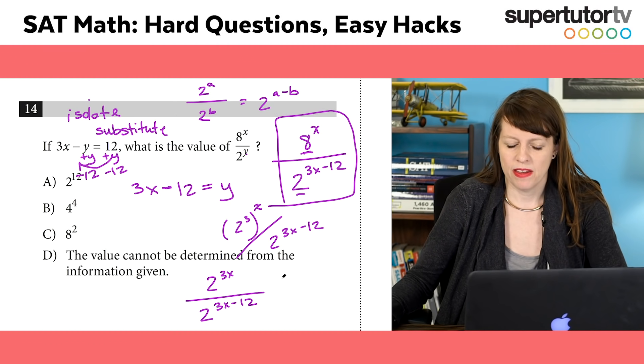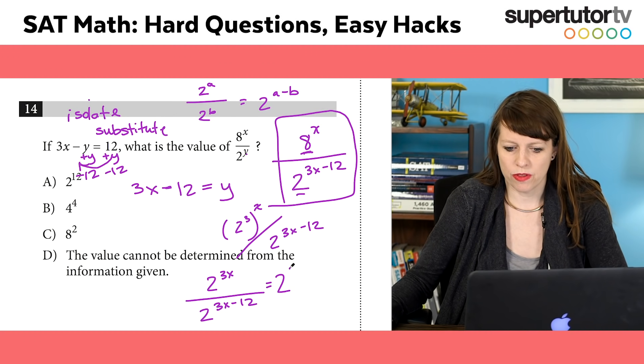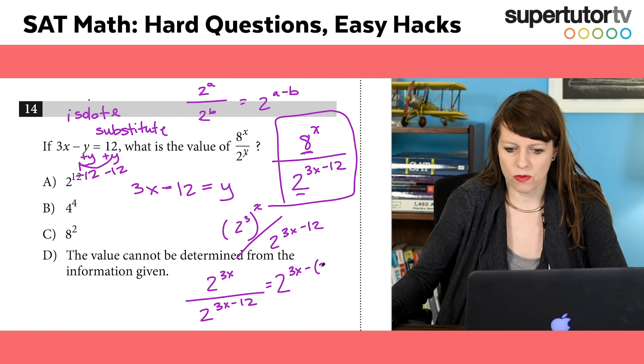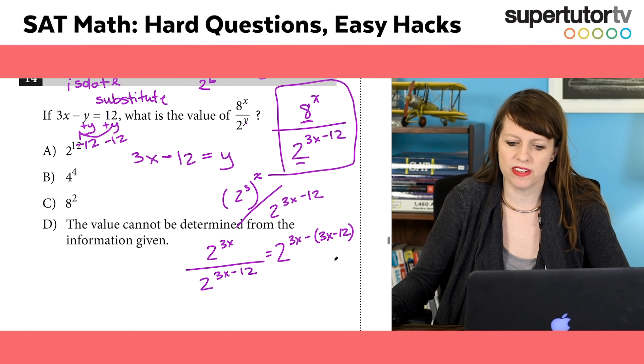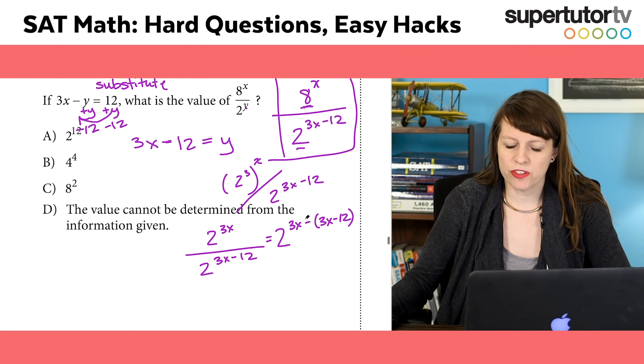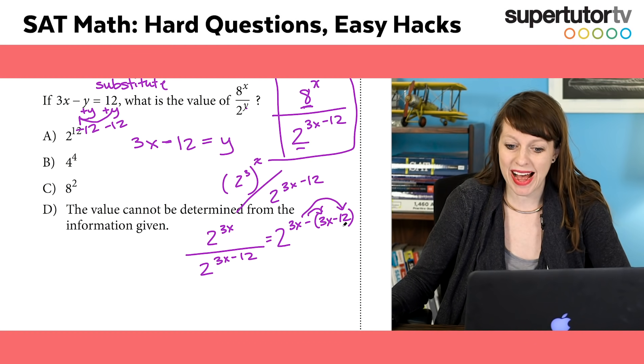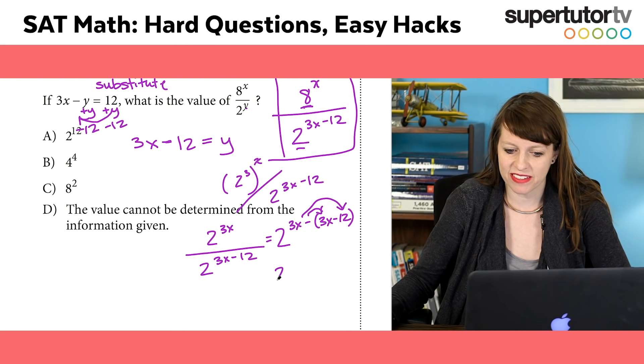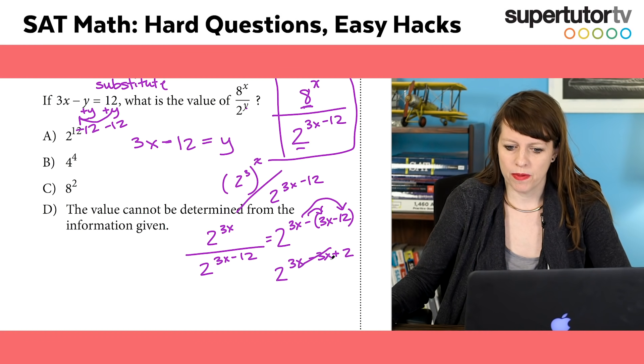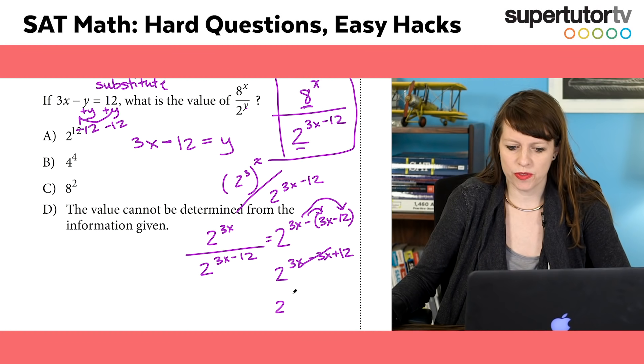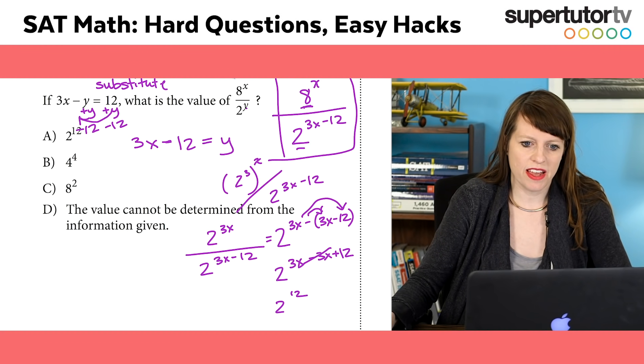All I have to do is a over b, I do a minus b. So I'm going to do 3x minus that, and I get 2 to the 3x minus 3x minus 12. I always insert that in parentheses - don't forget the parentheses, really important. Then we distribute the negative: that becomes negative 3x, that becomes positive 12. And do you see how my 3x's cancel? Those cancel, and all I get is 2 to the 12th. That's answer choice A. I'm done.